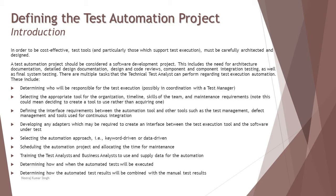For example, determining who will be responsible for test execution — obviously with the coordination of the test manager, as the test manager mainly makes such decisions. Selecting the appropriate tool for the organization, timeline, and skills of the team — what they already have and what needs to be upgraded. Defining the interface requirements between the automation tool and other tools such as test management. Many tools have integration possible between the management tool and the automation tool so that statistics from automation execution can be imported to the test management tool without further effort.